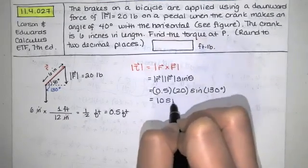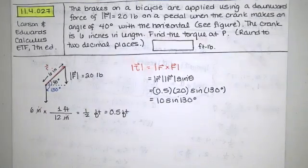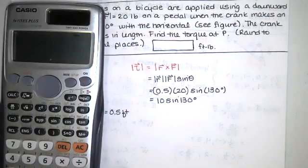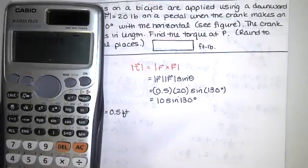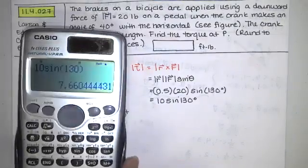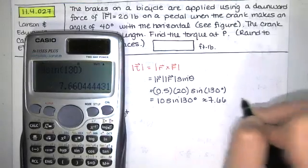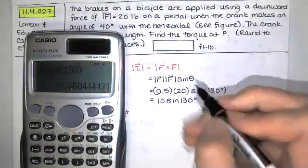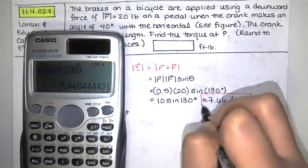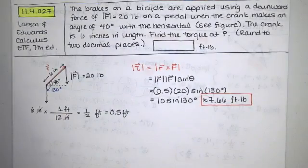We end up with 10 times the sine of 130 degrees, rounded to two decimal places. In degree mode on my calculator I get about 7.66 foot-pounds. That's the answer.